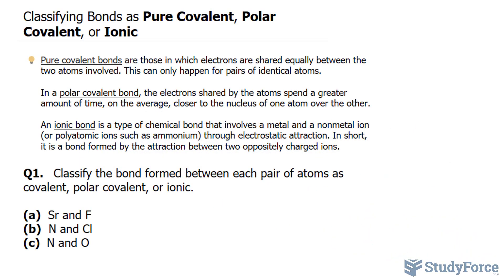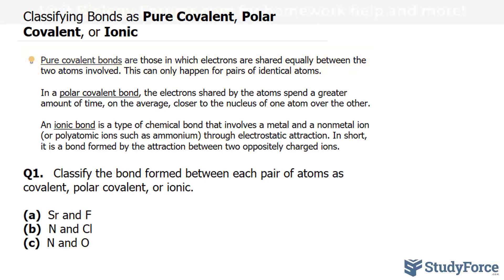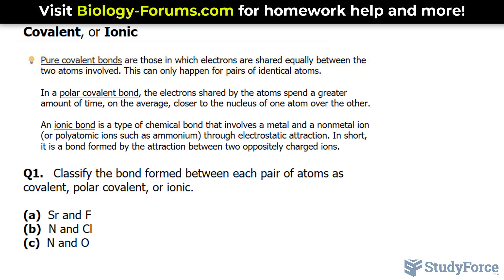In this lesson, we'll be classifying bonds as pure covalent, polar covalent, or ionic. Let's start with a bit of theory. Pure covalent bonds are those in which the electrons are shared equally between the atoms involved, and this usually happens for a pair of identical atoms.